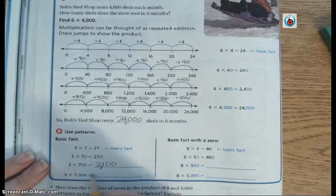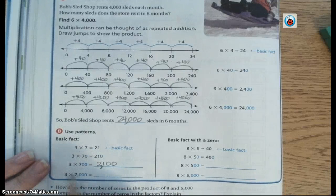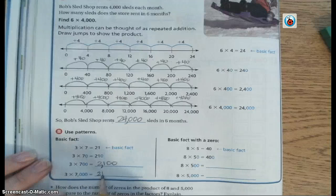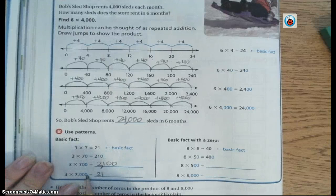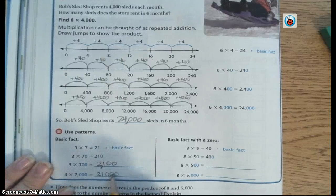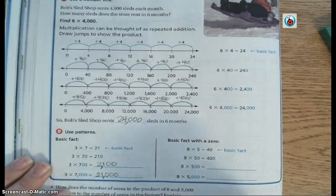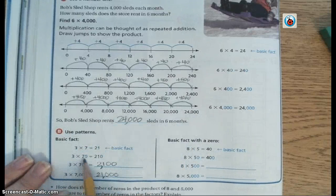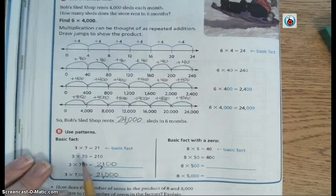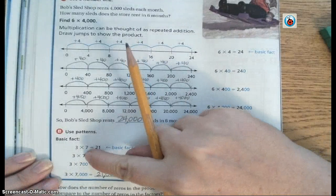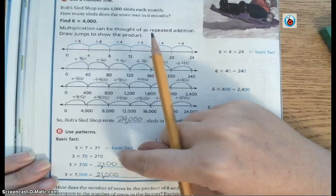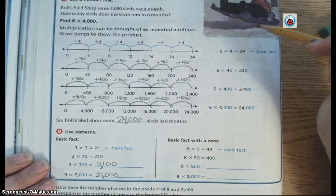And then down here, I'm going to do the same thing. 3 times 7 again. So it's 21. And then instead of 2 0s, I have 1, 2, 3 0s. And my answer is 21,000. So if you can see a pattern that when you're multiplying by a number that has 0s in the end, you can take the basic fact, do that multiplication fact, and then add your 0s back on your product.